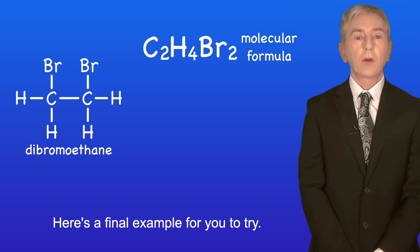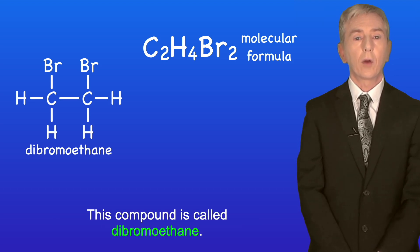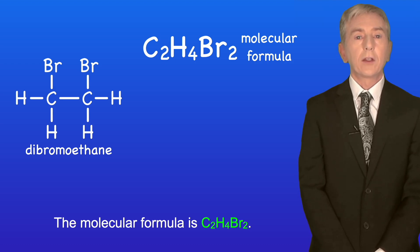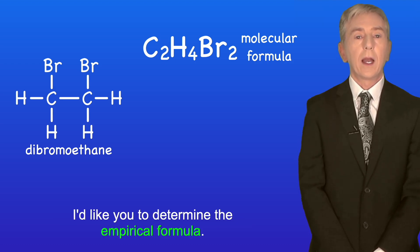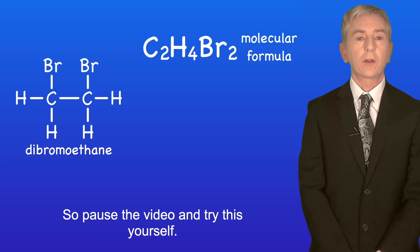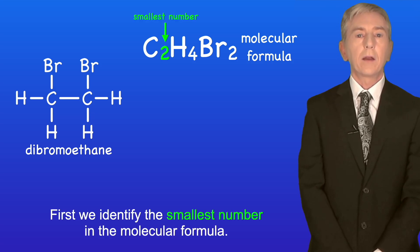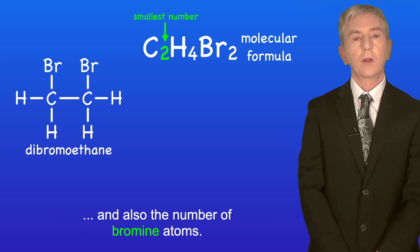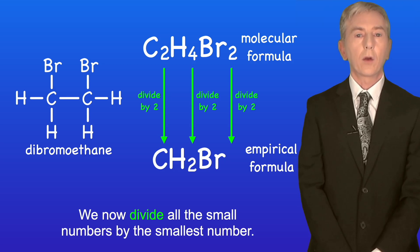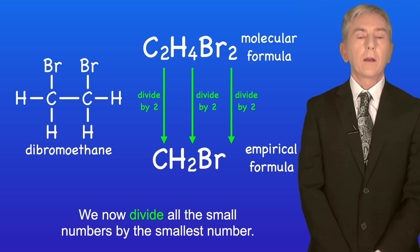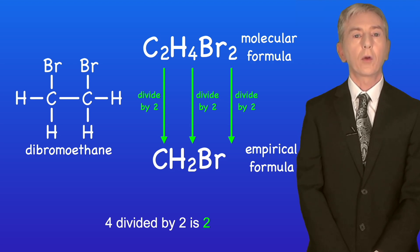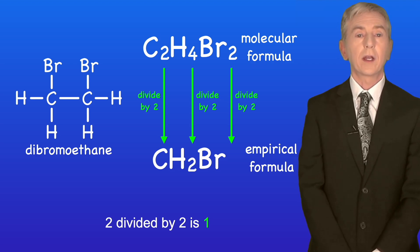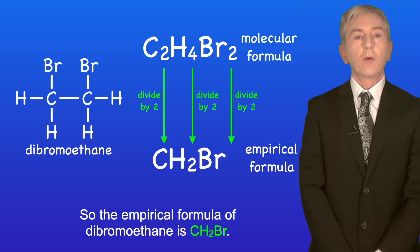Here's a final example for you to try. This compound is called dibromoethene. The molecular formula is C2H4Br2. I'd like you to determine the empirical formula, so pause the video and try this yourself. First we identify the smallest number in the molecular formula — in this case the smallest number is two, which is the number of carbon atoms and also the number of bromine atoms. We now divide all the numbers by the smallest number: two divided by two is one, four divided by two is two, and two divided by two is one. So the empirical formula of dibromoethene is CH2Br.